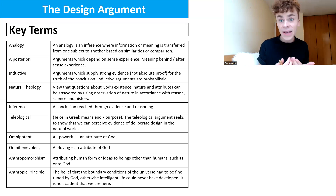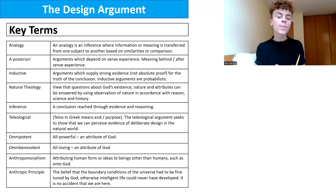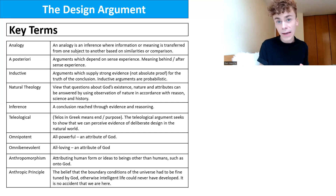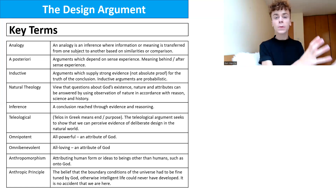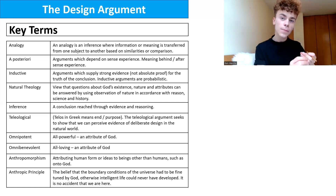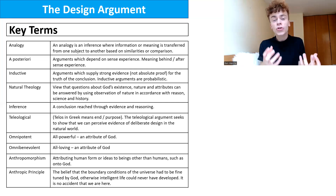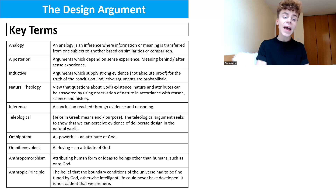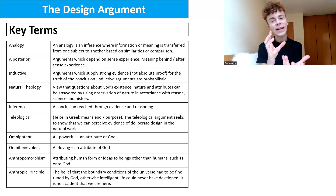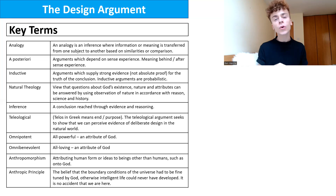Anthropomorphism means attributing human form or ideas to beings other than humans, such as onto God. The idea of God as a designer — are we anthropomorphizing God by comparing him to a watchmaker? The anthropic principle is the belief that the boundary conditions of the universe had to be fine-tuned by God, otherwise intelligent life could never have developed. The world must have been perfectly designed to facilitate human life — we'll be discussing Fr Tennant and his anthropic principle argument.